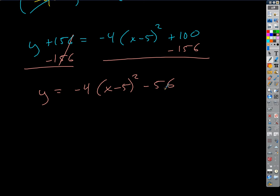And we get it — we're done. There's vertex form. So what's A? Negative 4. What's H? 5. What's K? Negative 56. The function in vertex form is f of x equals negative 4 times x minus 5 squared minus 56.